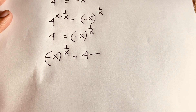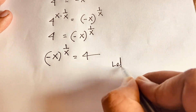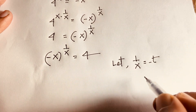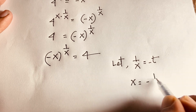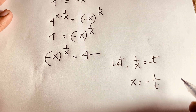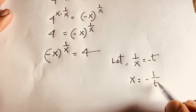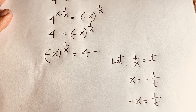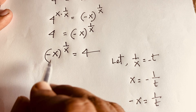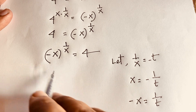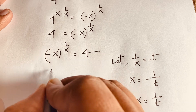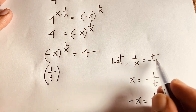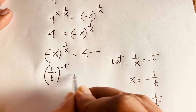Now let 1 over x equal negative t, so x is equal to minus 1 over t. Note that t is a positive value. This means negative x is equal to 1 over t. So substituting, we get 1 over t to the power 1 over x — and 1 over x equals negative t — is equal to 4.